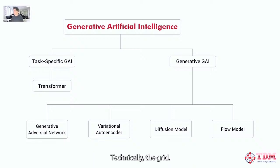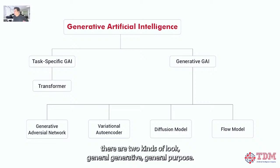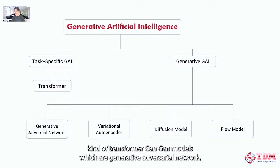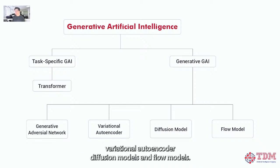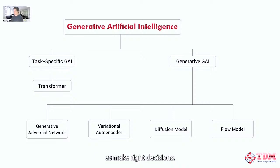Generative AI has two kinds: general purpose generative AI and task-specific generative AI. Task-specific can use different kinds of transformer GAN models — generative adversarial networks, variational autoencoders, diffusion models, and flow models. This goes a little bit deeper than normal, but if you are looking to build an application in Gen AI, these concepts will help you think better and make the right decisions.